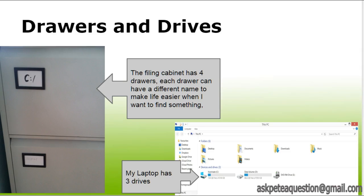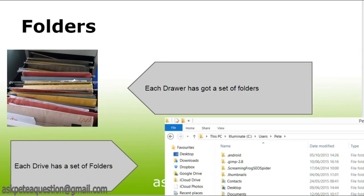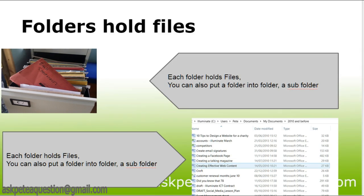My laptop has got three drives: a C drive, a D drive, and an E drive, and I can give them names if I desire. Each drawer on my filing cabinet has a set of folders — a wonderfully organised system — and each drive on my computer has a set of folders too, looking a bit tidier thanks to electronics. Each folder can hold files, but you can also put a folder into a folder. So for example there's a bank statements folder inside a banking folder, and you can keep having a subfolder of a subfolder. However, I tend not to go too deep because otherwise I can never find anything.